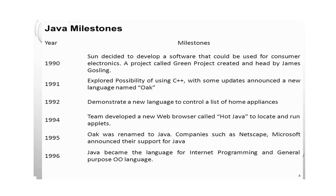The Green Project was headed by scientist James Gosling. In 1991, the team announced a new language named Oak. In 1992, they demonstrated the new language to control a list of home appliances. In 1993, the World Wide Web appeared on the internet and transformed the text-based environment into a graphical-based environment. In 1994, the team developed a new web browser called Hot Java.